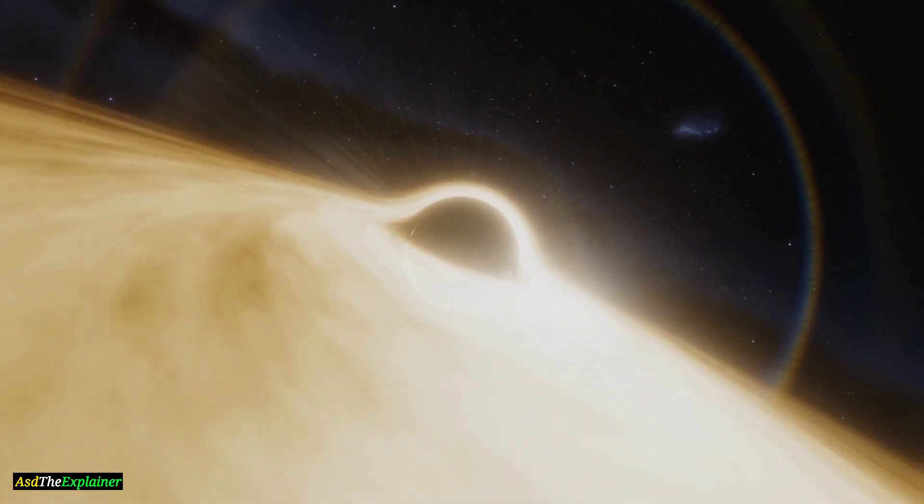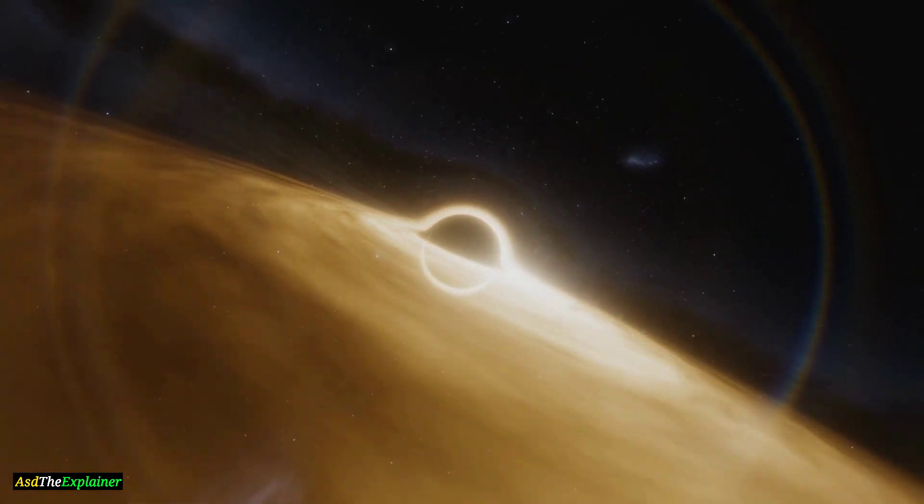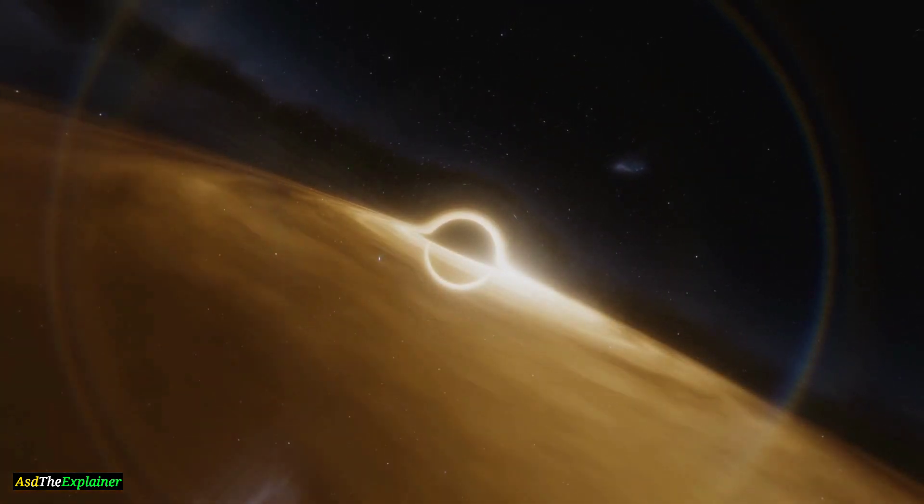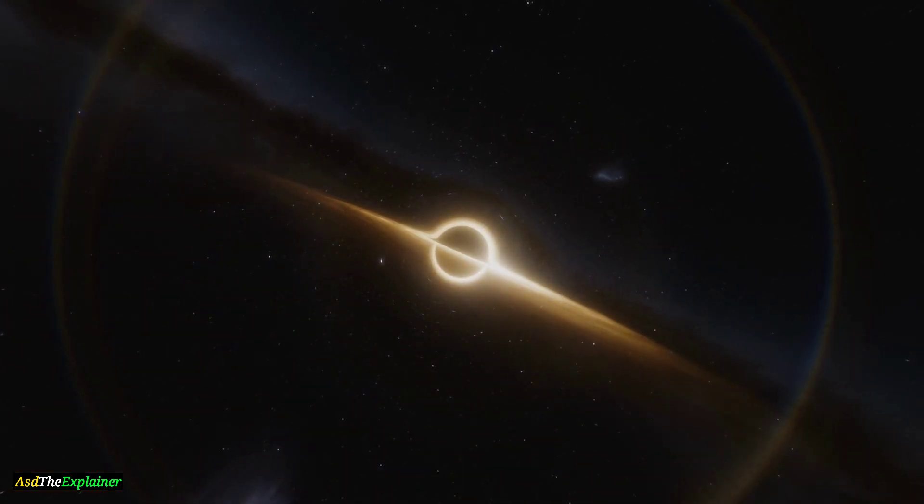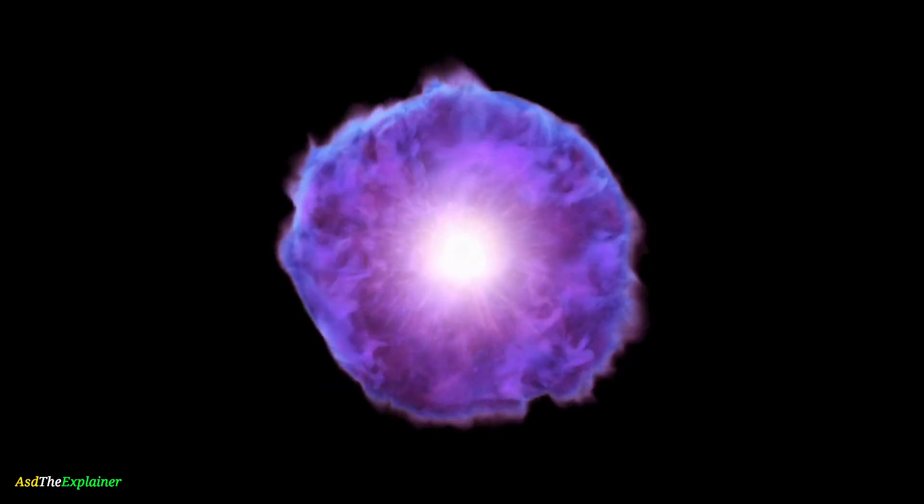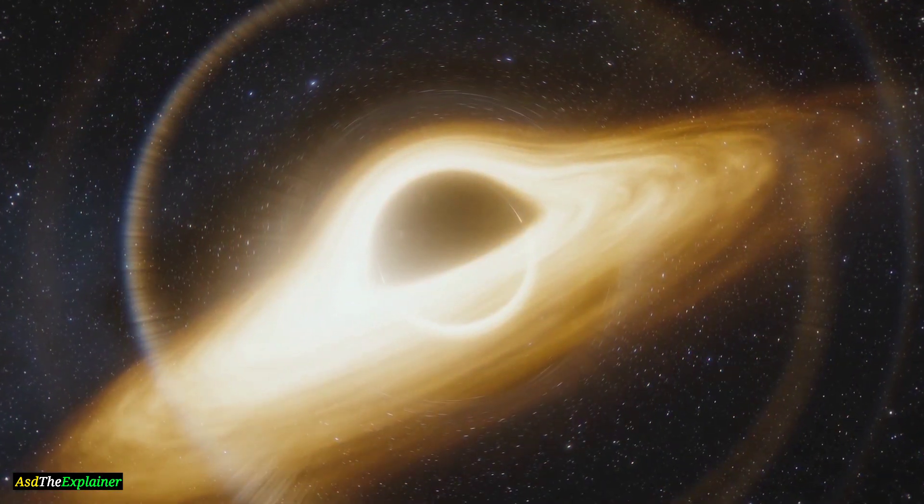This technique, called interferometry, allowed the team to achieve a resolution high enough to see the black hole's event horizon. By analyzing the data collected by the EHT, the team was able to create an image of the black hole that showed the silhouette of the event horizon against the glow of the superheated gas swirling around it.